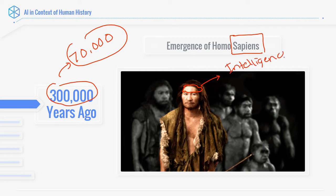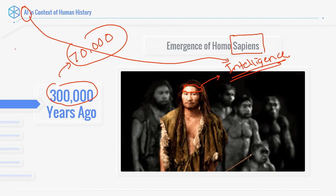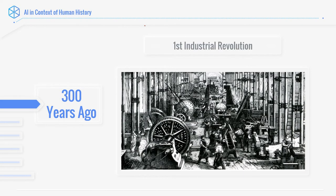Artificial intelligence contains the word 'intelligence' and also a key word: 'artificial.' We are trying to simulate our intelligence artificially. Our brain, our intelligence, reached what it is now around 70,000 years ago — that's when our brain became indistinguishable from today's. Then a revolution came, which was the first industrial revolution.